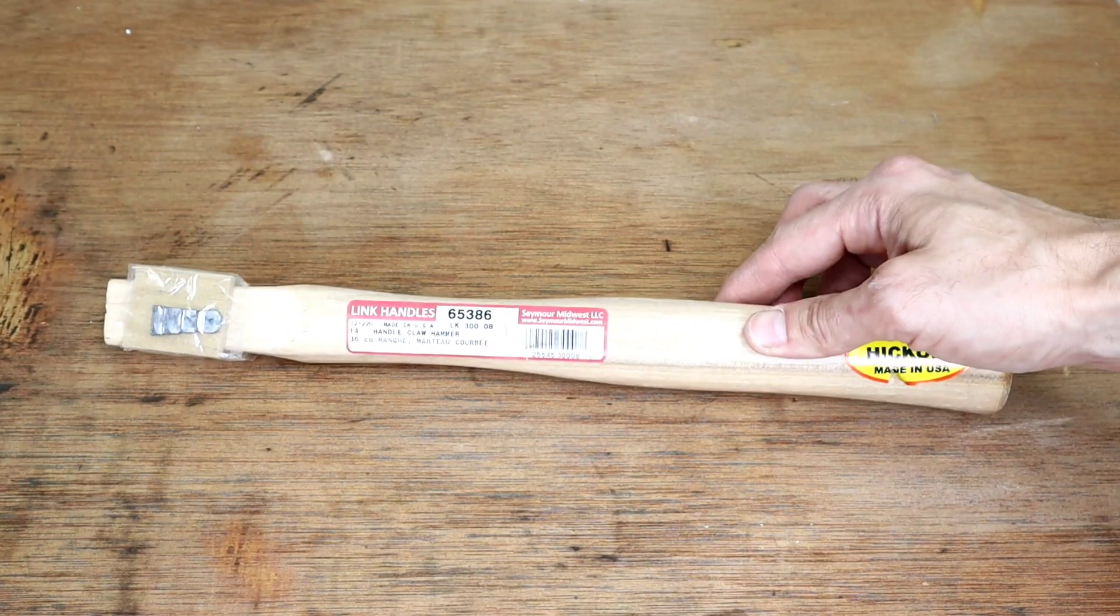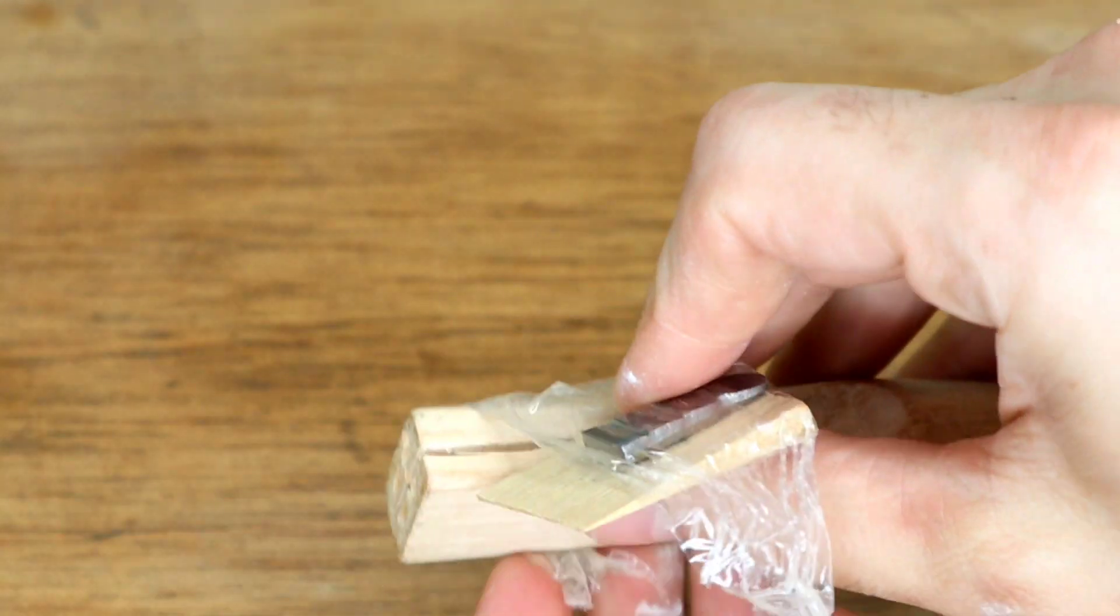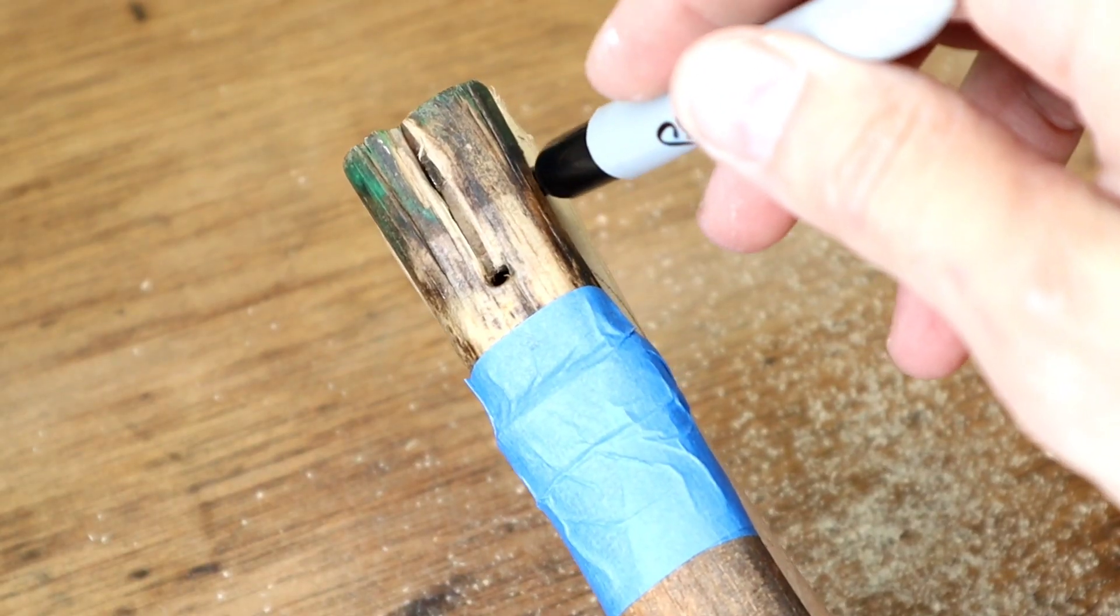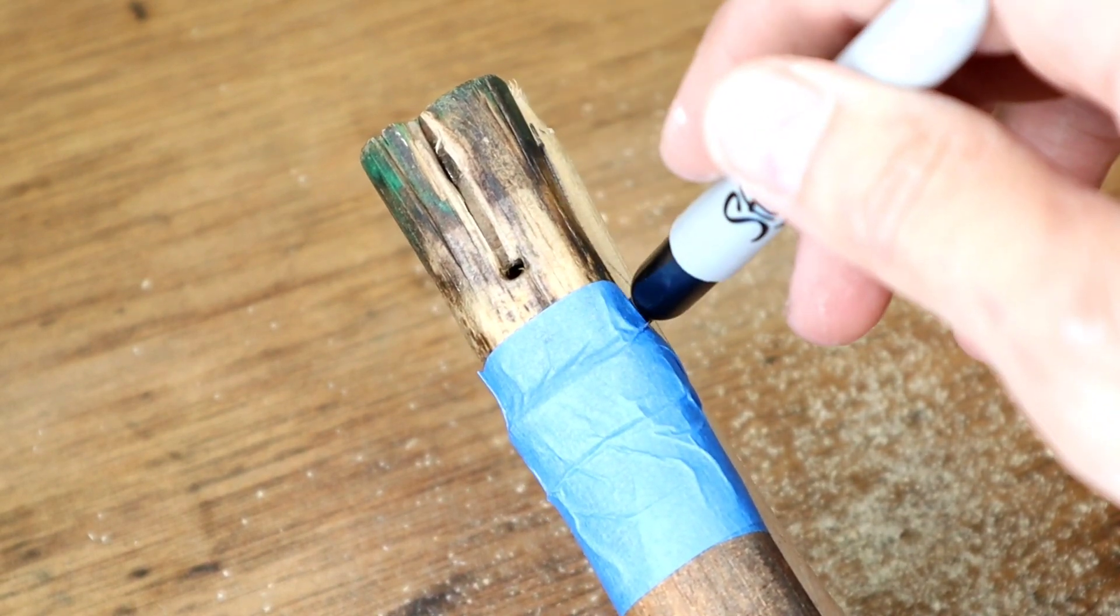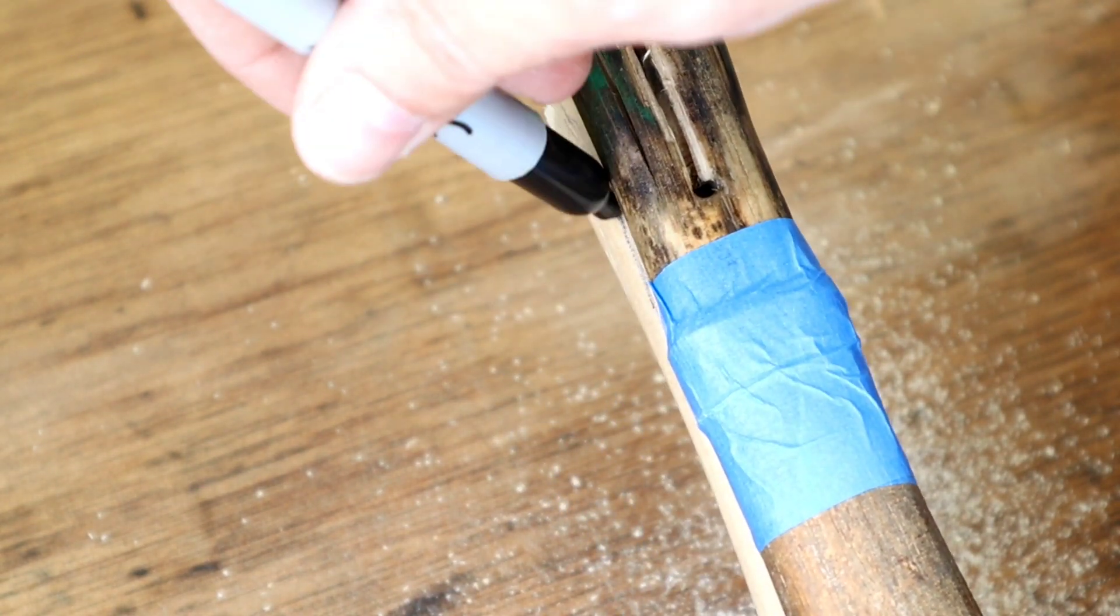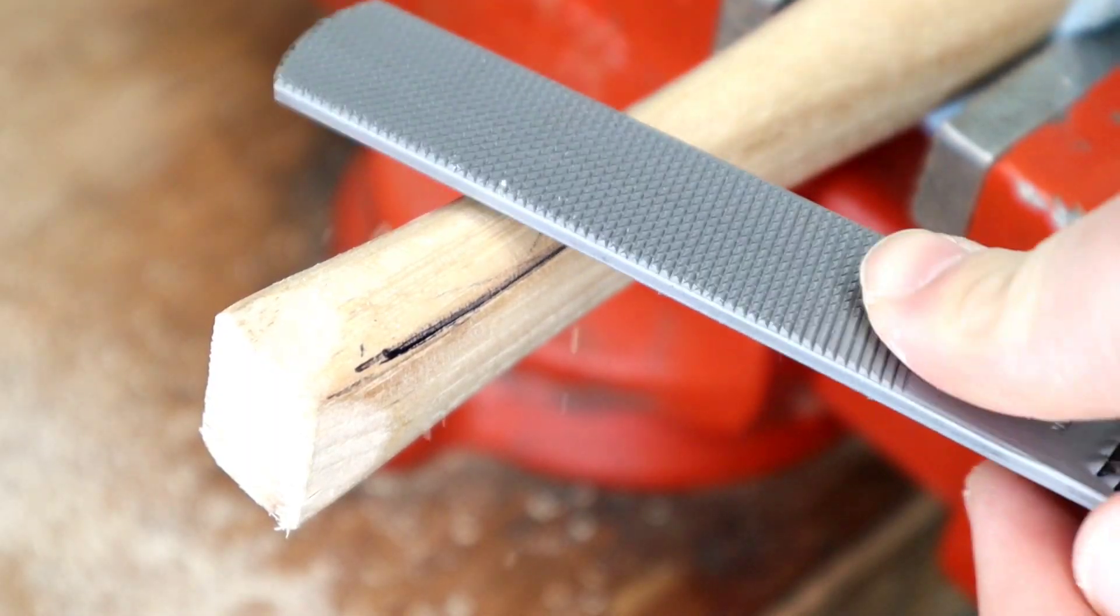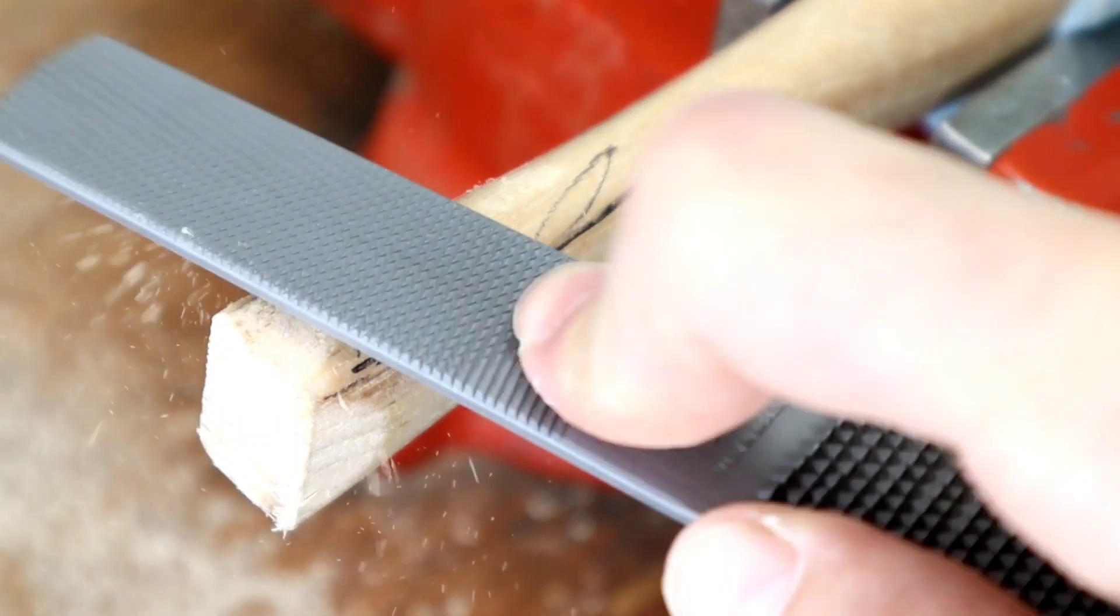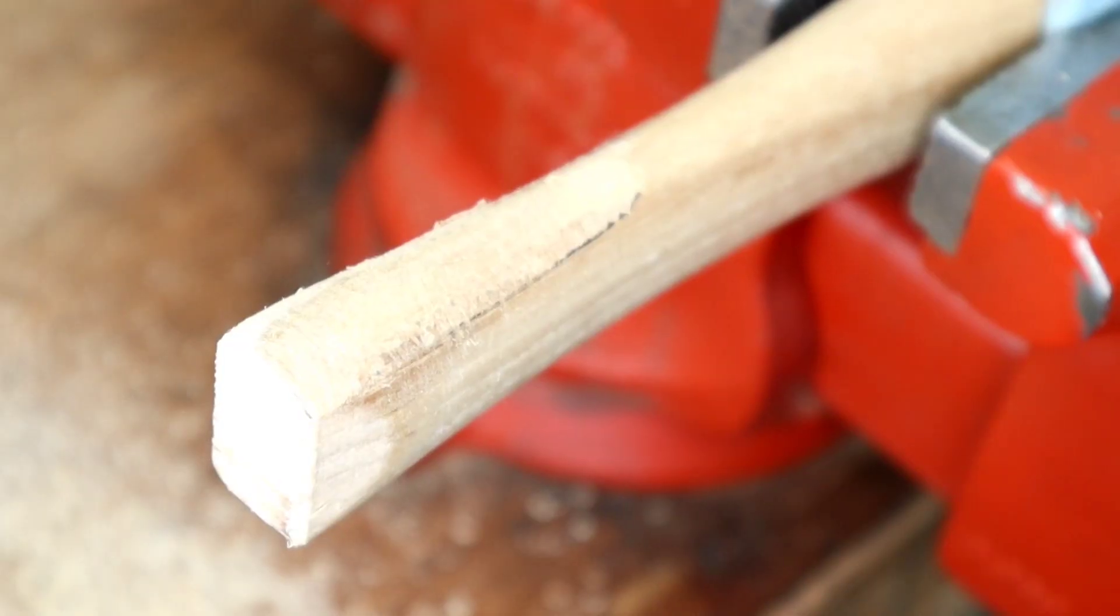While the paint was drying, I started work on the handle. This Seymour Midwest hickory handle came with a clear lacquer coat and two wedges to secure it into the jaw. Seymour has been making tools since the 1800s as well. Use the old handle as a guide to help you shape it and file down the wood with a rasp. It doesn't take much effort to whittle it down, so frequently check with the jaws to make sure that you don't take off too much.